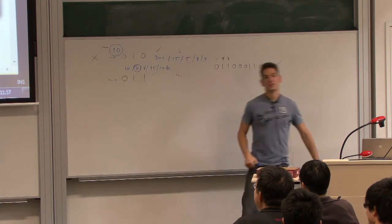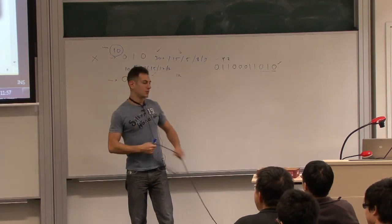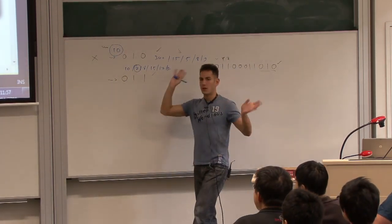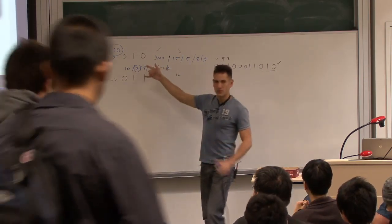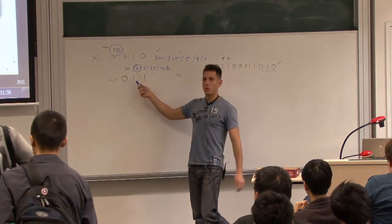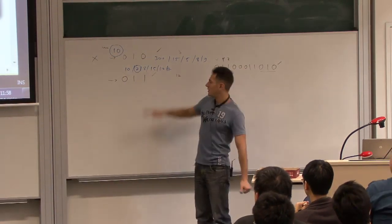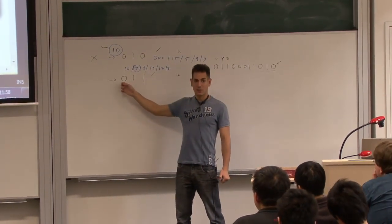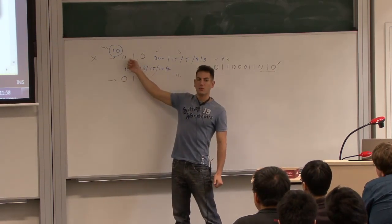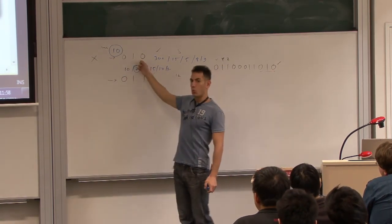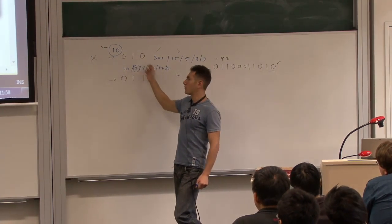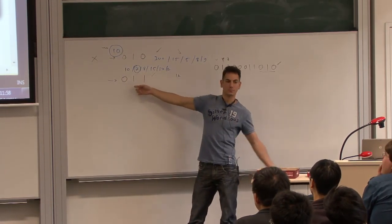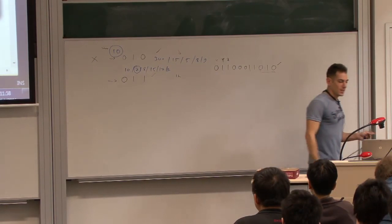The reason is: for the 0,1,0 pattern, if you get 0,1 followed by a 0 — that's a win, and the trailing 0 can be the start of the next pattern. But for 0,1,1, if you get 0,1 followed by a 1 — that's a win, but then the trailing 1 cannot be the beginning of the next 0. So the 0,1,1 pattern takes longer on average than the 0,1,0 pattern, because failed attempts recover more slowly.